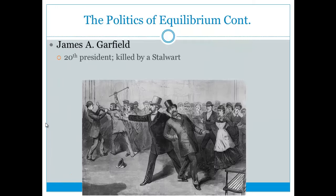The 20th president, James A. Garfield, was killed by a stalwart who, when he shot him, said 'I am a stalwart and Chester A. Arthur is now president.' Garfield was not in favor of patronage. A great book on this is Destiny of the Republic by Candace Miller — it covers the Garfield assassination and key figures like Roscoe Conklin and Chester Arthur.